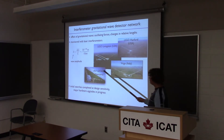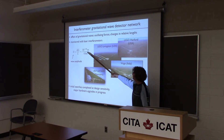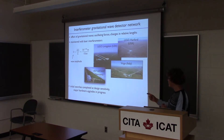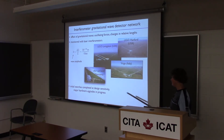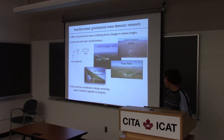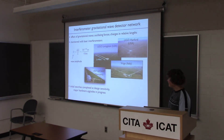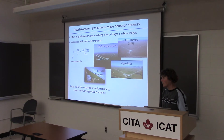These are extremely sensitive instruments. They can detect displacements of 10 to the minus 18 meters relative between two points on the arms. They've been built already in the 1990s and have completed some initial searches, but they weren't very sensitive, so they didn't really expect to detect any gravitational waves. But currently a major hardware upgrade is in progress to make them 10 times more sensitive.